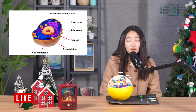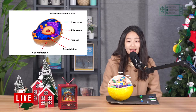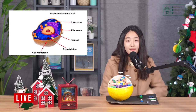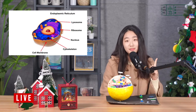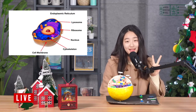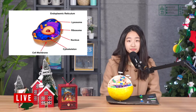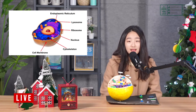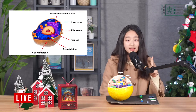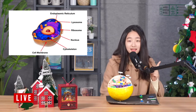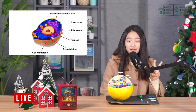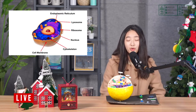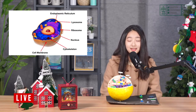Endoplasmic reticulum, we also call it ER. There are two types of ER: smooth ER and rough ER. The functions of the ER are: first, making lipids; second, processing and transporting protein.